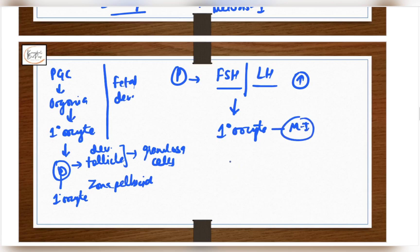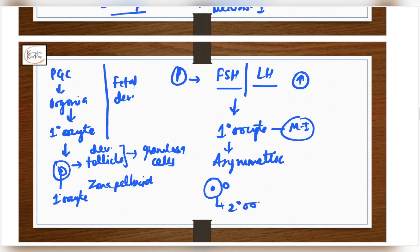When meiosis 1 is completed, this division is asymmetric — that means there will be one big cell and one small cell. The bigger cell has all the cytoplasm and the nucleus — that is the secondary oocyte. The other small cell is called the first polar body, which will eventually degenerate.